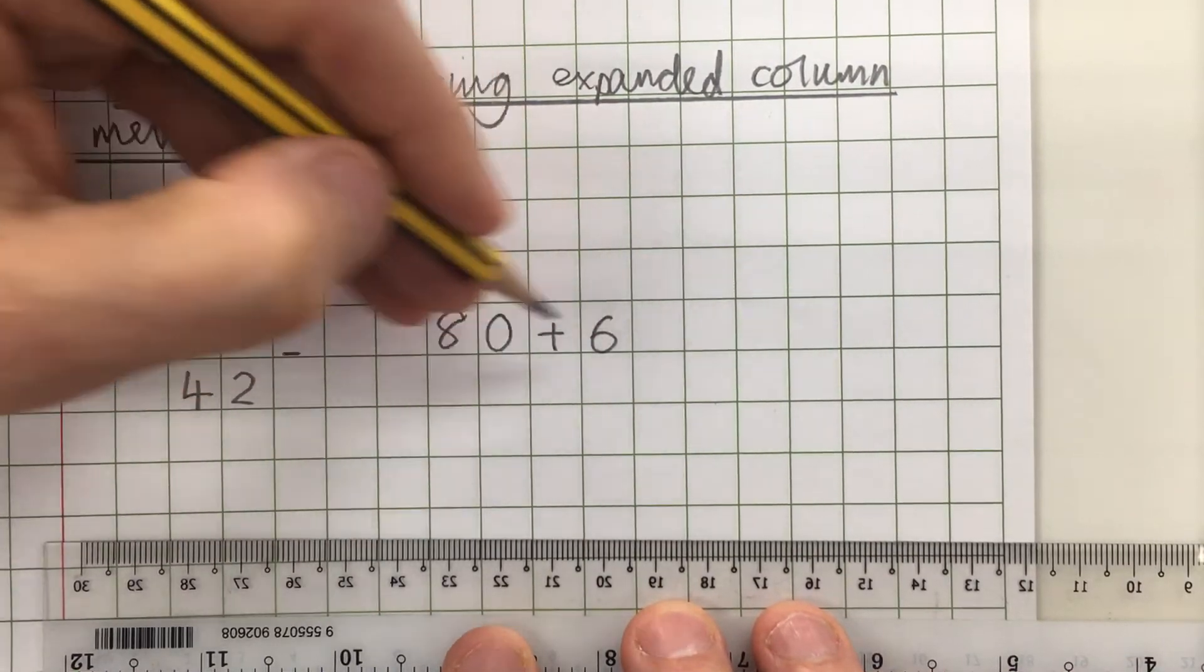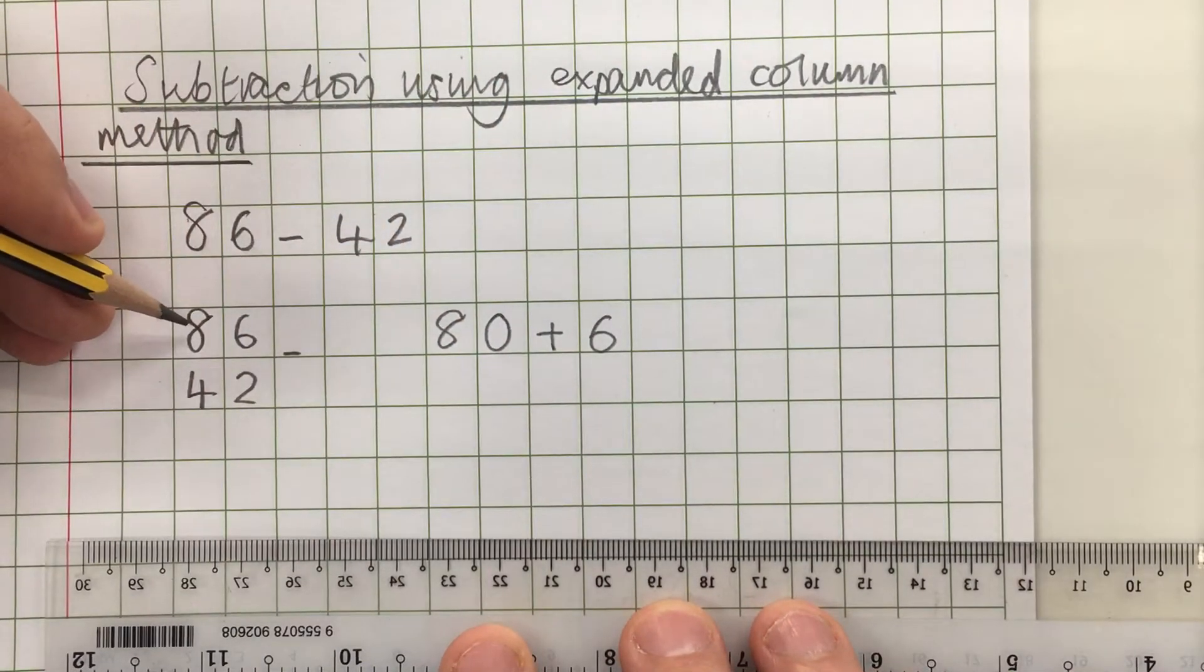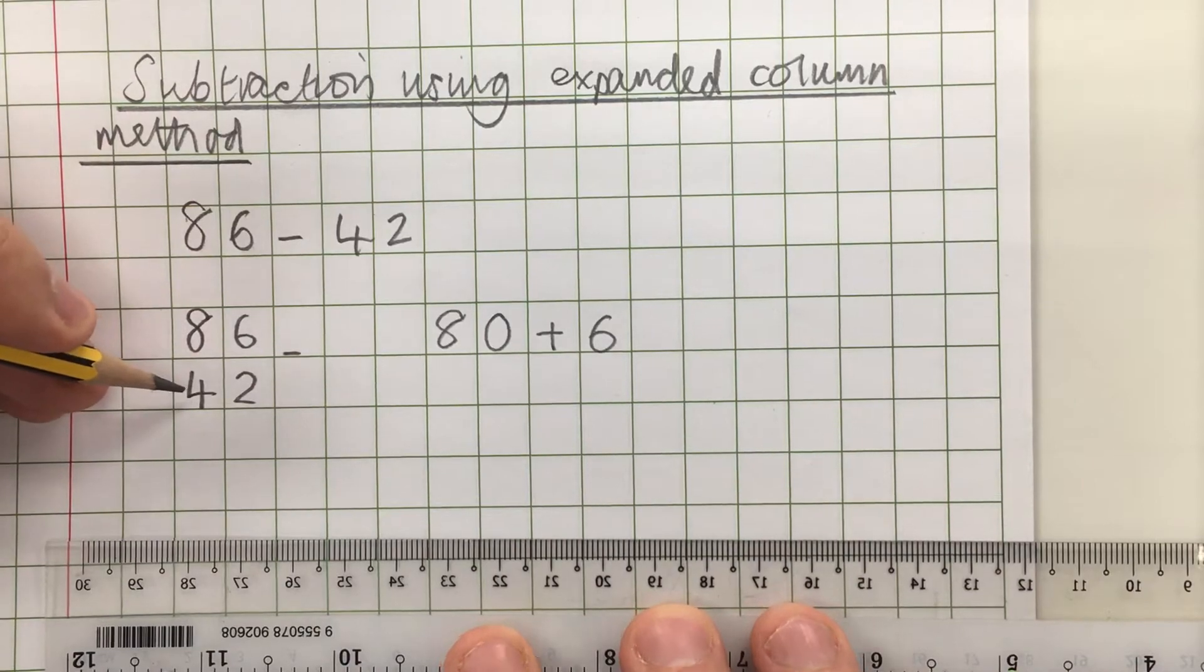So the value of these parts is the same as the total there, 86. And I'm going to do the same for this lower number.